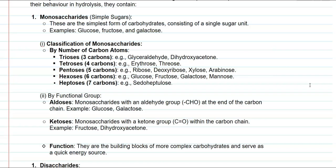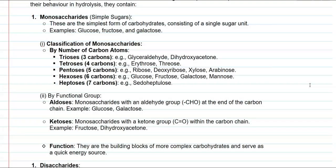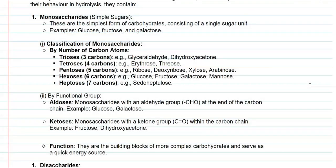Next is the classification of monosaccharides based on the functional group they possess. Monosaccharides containing an aldehyde group, represented by a CHO group at the end of the carbon chain, are commonly referred to as aldose sugars. Examples are glucose and galactose. Whereas a monosaccharide containing a ketone group (C=O) at the end of the carbon chain is referred to as a ketose. Examples are fructose and dihydroxyacetone, the simplest form of sugar.